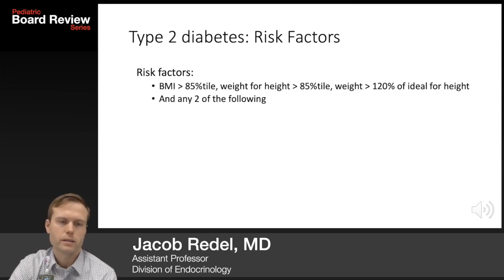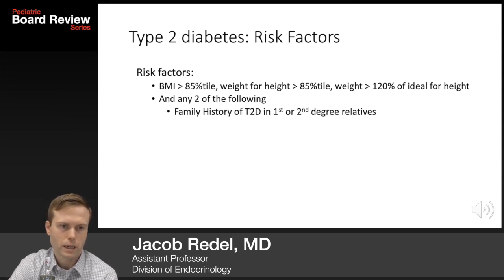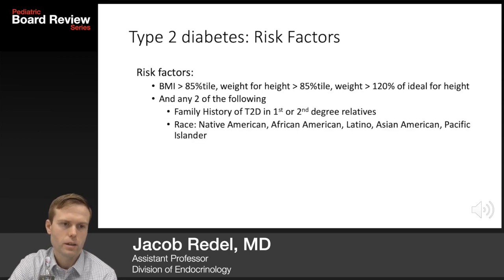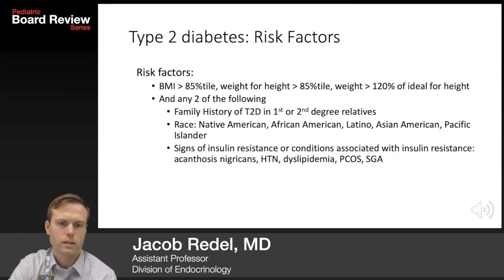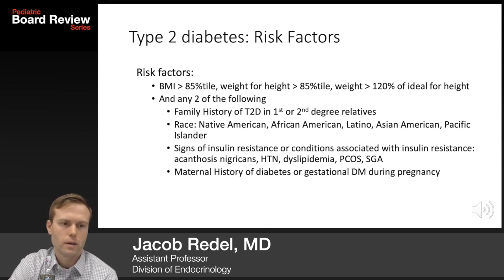Risk factors for type 2 diabetes include overweight BMI or weight above ideal body mass, family history of type 2 diabetes in a first or second degree relative, and certain races or ethnicities. Evidence of insulin resistance on exam — such as acanthosis — or conditions associated with insulin resistance like metabolic syndrome, PCOS, or being born SGA also increase risk. A maternal history of diabetes or gestational diabetes during pregnancy is an additional risk factor.